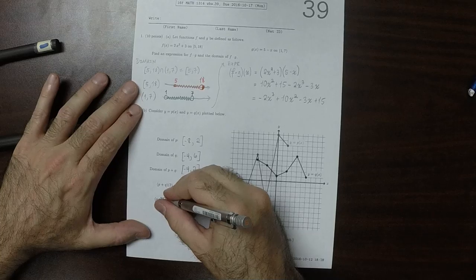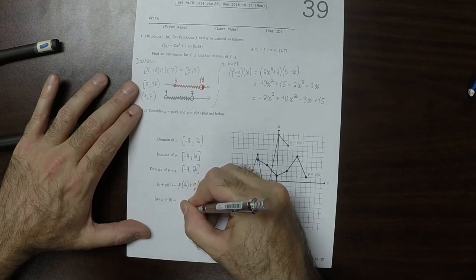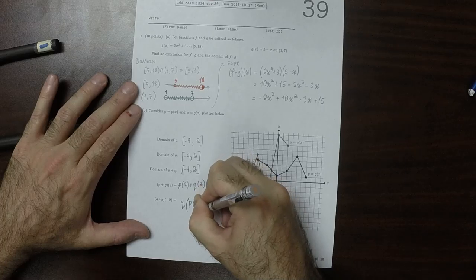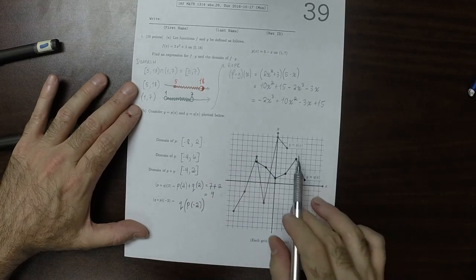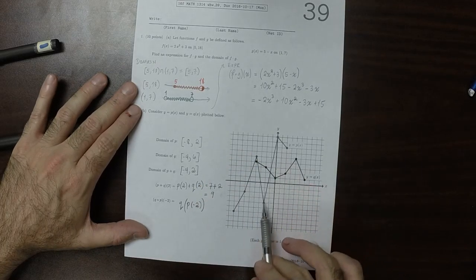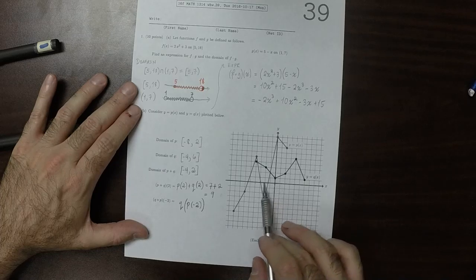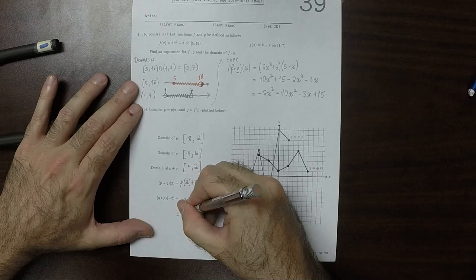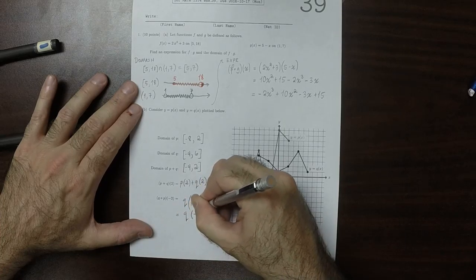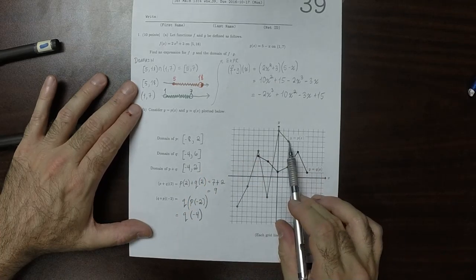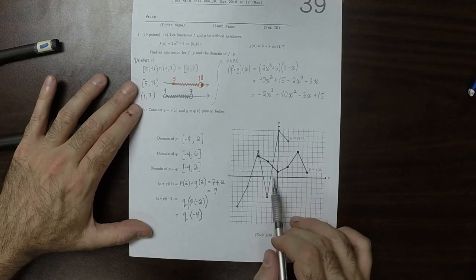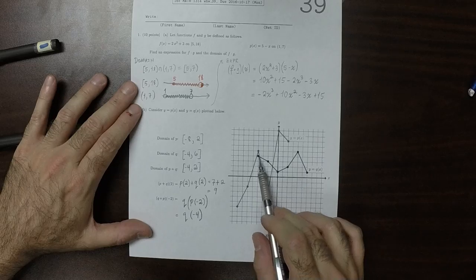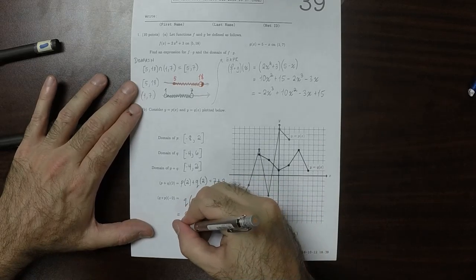And then now this would be q evaluated at p of negative 2. So p is the gray and evaluated at negative 2, that's negative 4. So that's q evaluated at negative 4. And now q evaluated at negative 4 is 1, 2, 3, 4, 5.